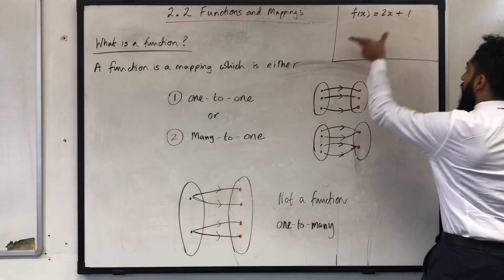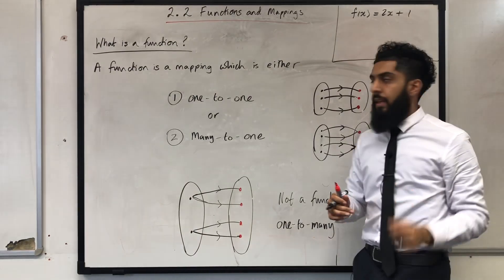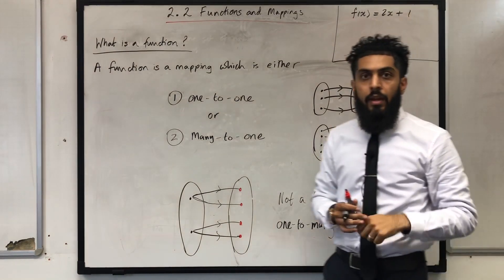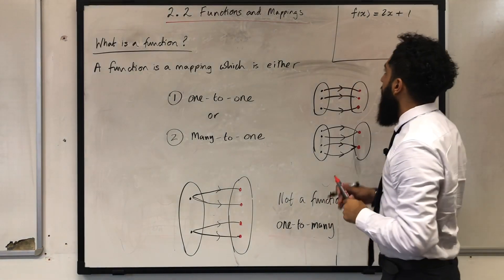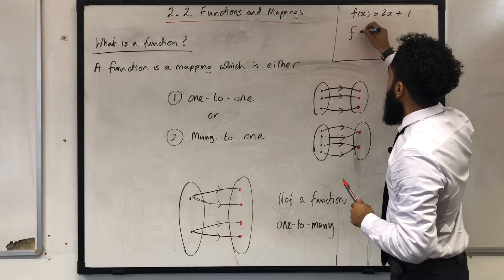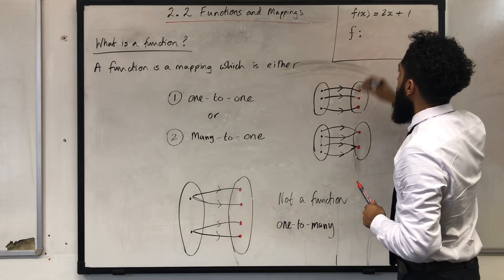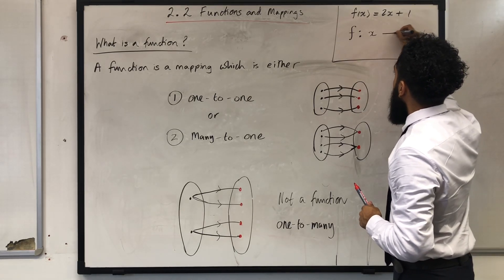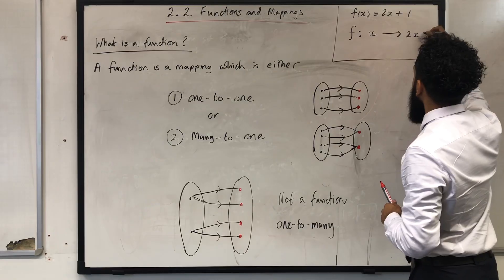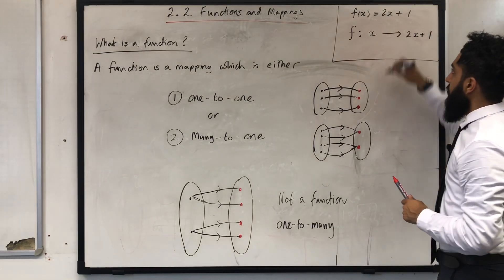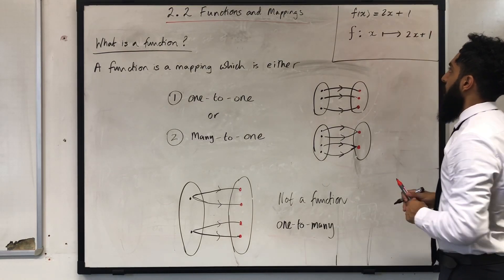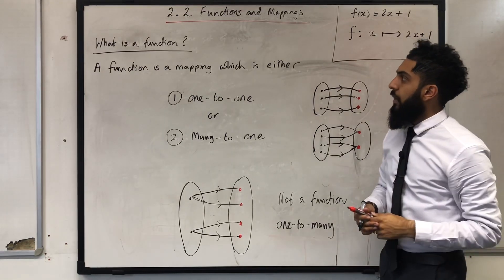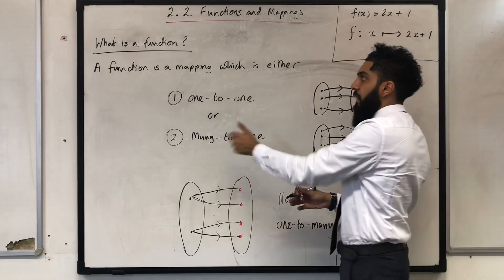Over here we have function notation: f(x) = 2x + 1. The other way we can write this is f: x ↦ 2x + 1. That's the other way in which we can write a function, and that completes what is a function.